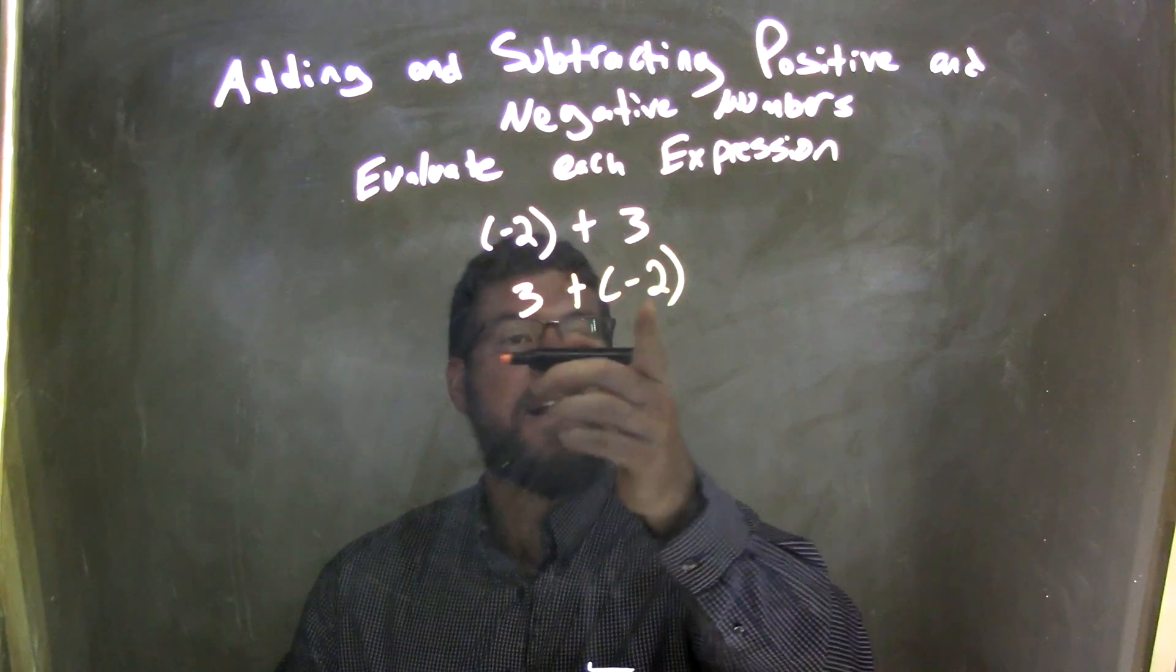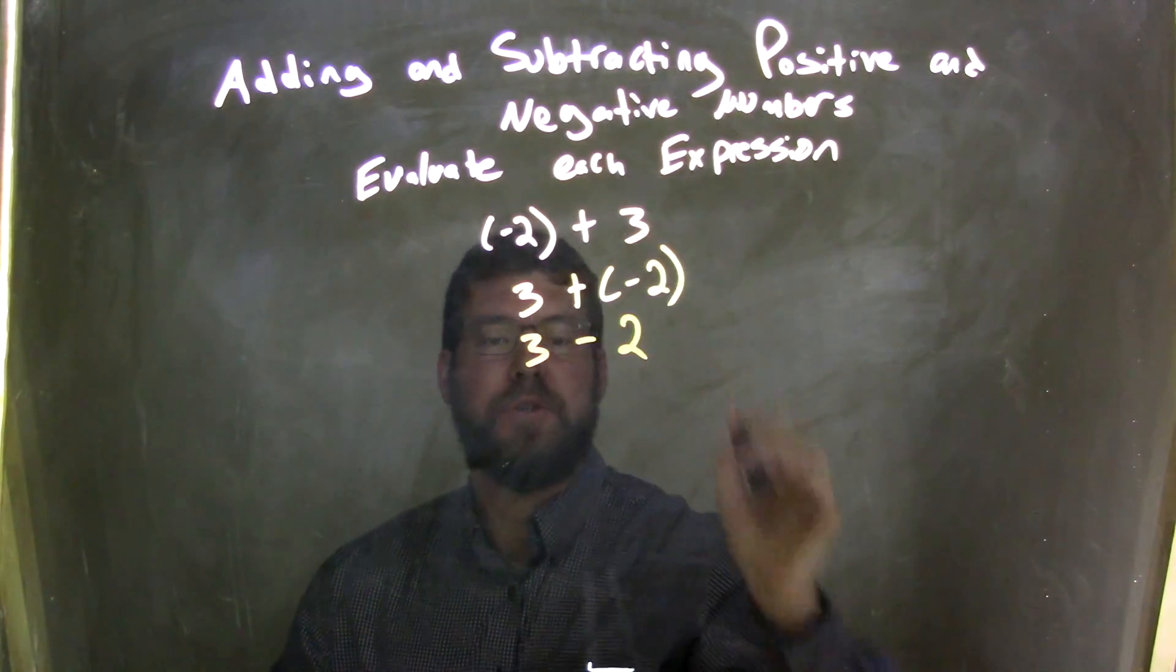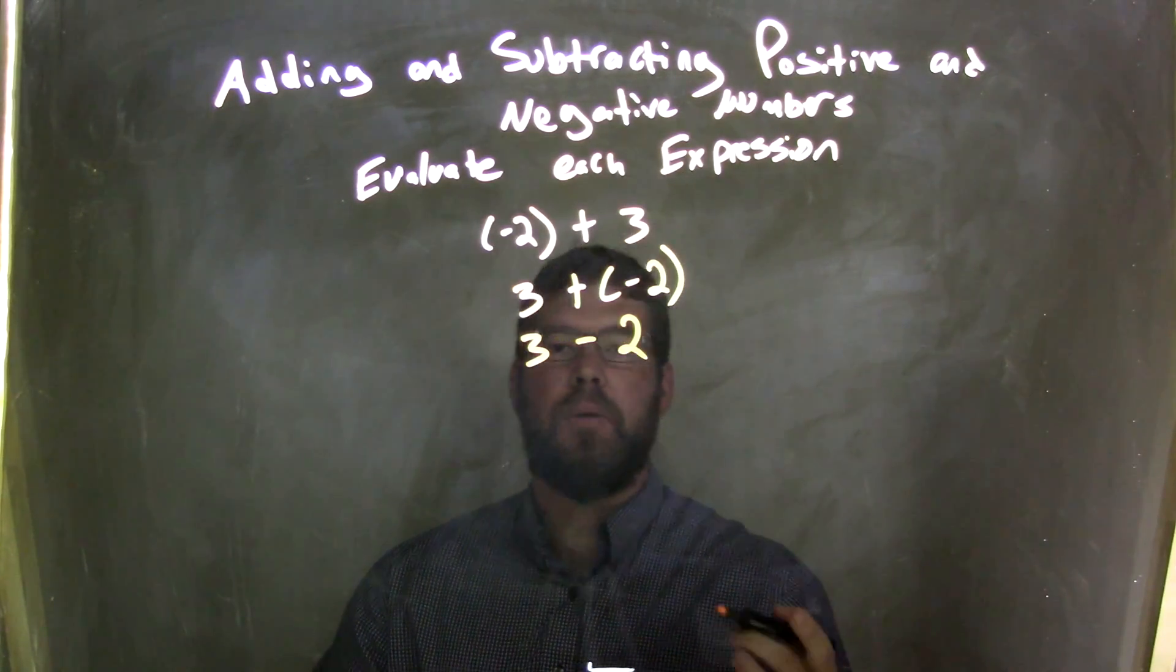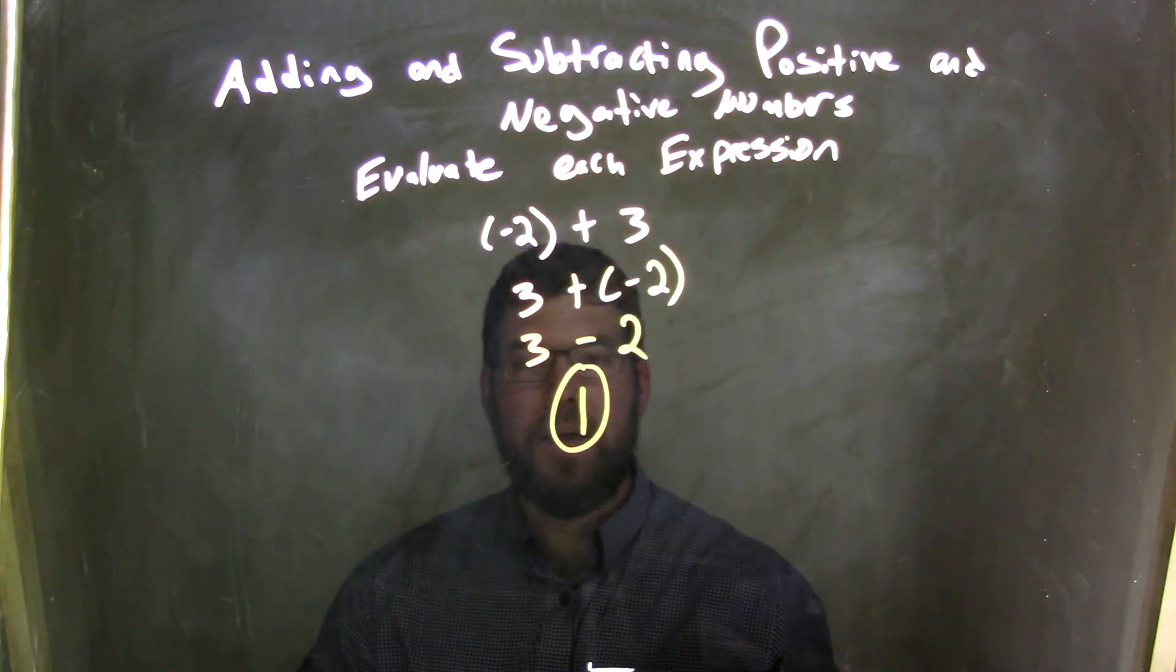We know if we add a negative, the same thing is subtraction, so we have 3 minus 2. Now that we have 3 minus 2, that's an easy problem to solve. 3 minus 2 is 1, and there is our final answer.